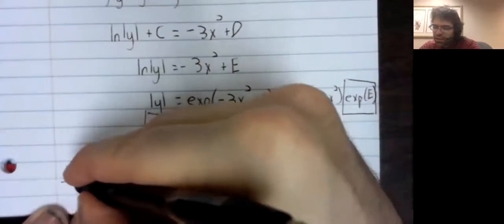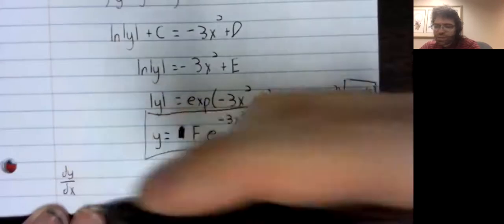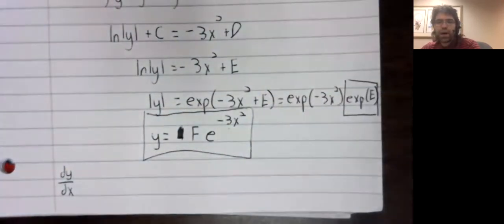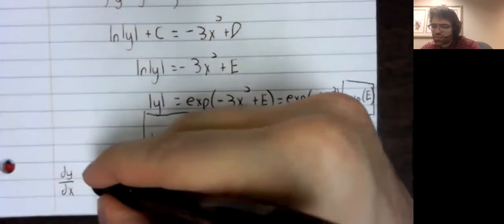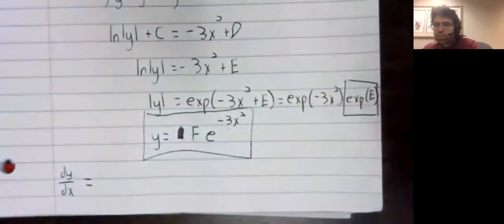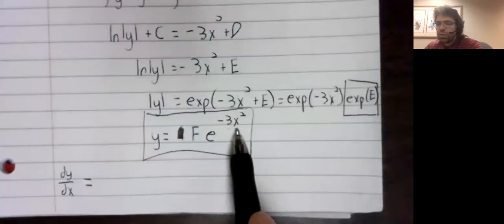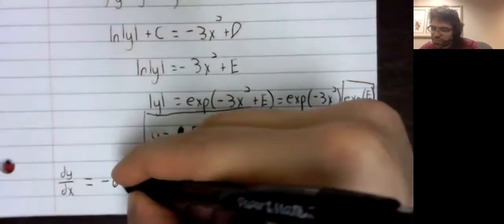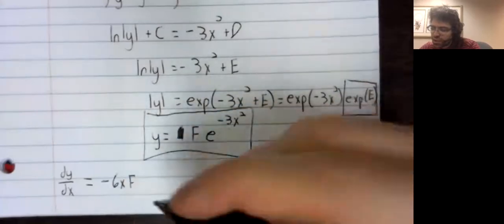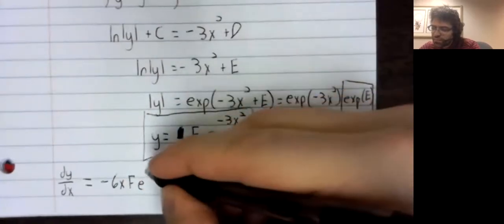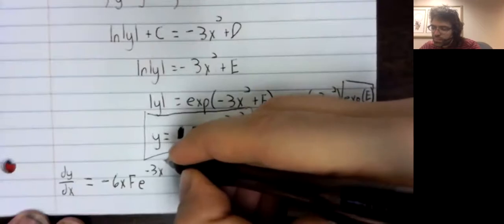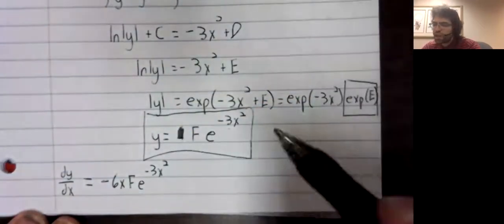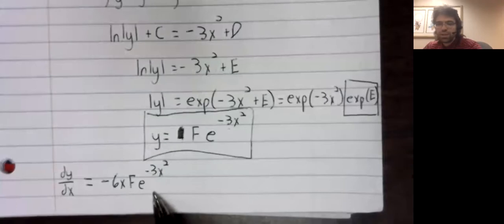And yet, the derivative of y with respect to x equals, from the chain rule, we get the derivative of this negative 6x, and then this expression. This is why.